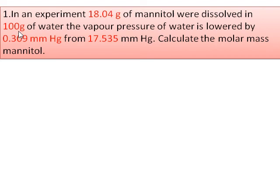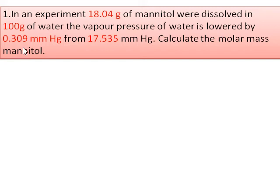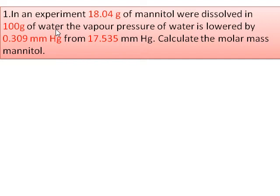Let us start with Problem 1. In an experiment, 18.04 gram of mannitol was dissolved in 100 gram of water. The vapor pressure of water is lowered by 0.309 mmHg from 17.535 mmHg. Calculate the molar mass of mannitol. In this problem, mannitol is the solute and water is the solvent.